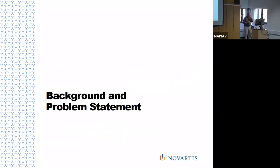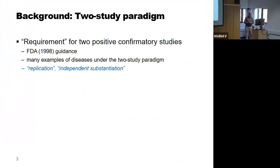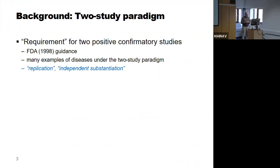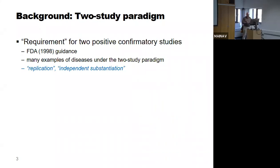It's a very specific problem in drug development: the Food and Drug Administration, the FDA regulatory agency in the US, has a specific requirement that whenever you want to submit a drug for market approval, you need two positive confirmatory trials — two phase three trials that are identically or very similarly designed, with the same endpoints, and you need both of these trials to be positive.